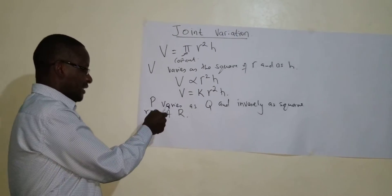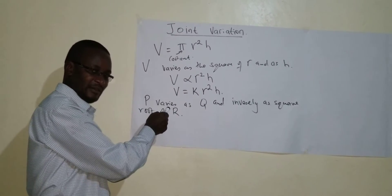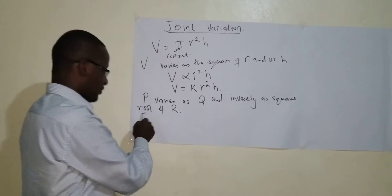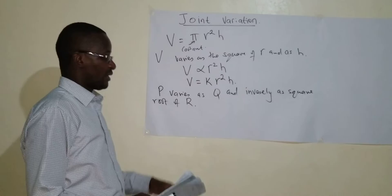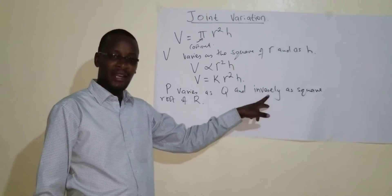So you can see in the first instance, it varies as Q, so this is direct variation. It is varying directly as Q. But inversely as square root of R. So R squared must be in the denominator because of the word inverse.